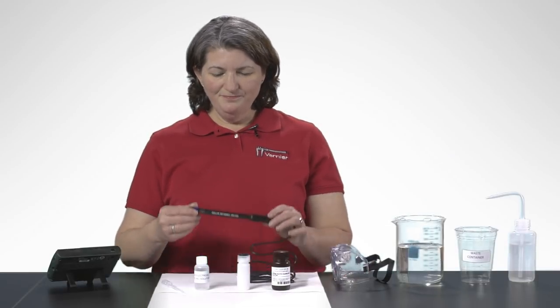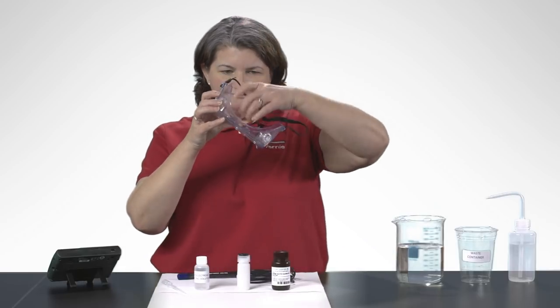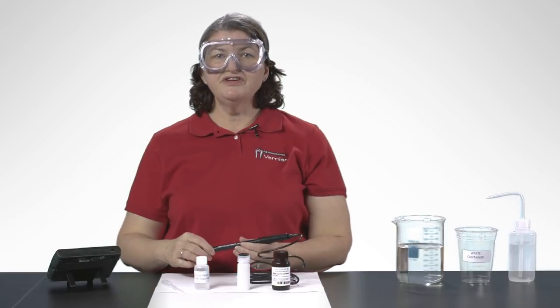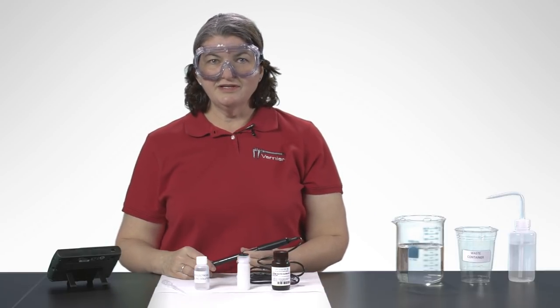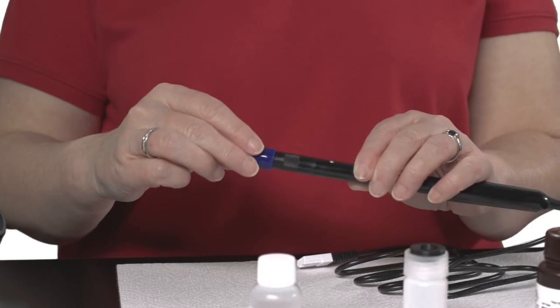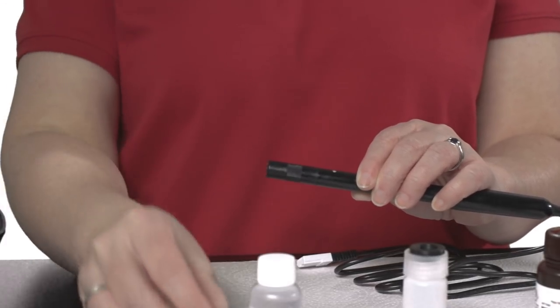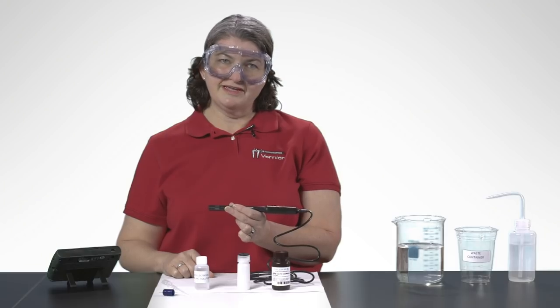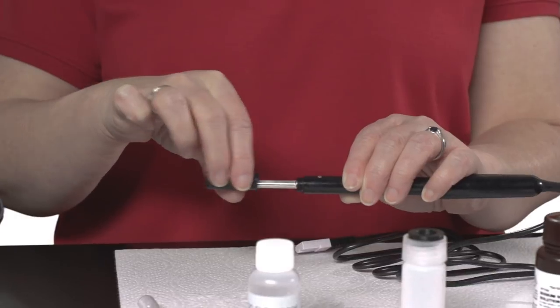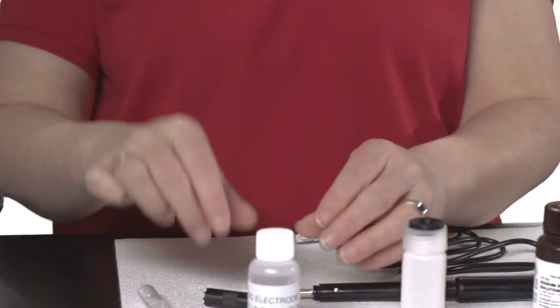So here's the probe, and I'm going to start with putting my goggles on. First thing you need to do is add the DIO electrode filling solution. So I'll take off my blue cap here, which you want to take off but save for when you store it later. It's a protective cap. And then at the end is a cap that unscrews, and that's where we're going to put our DIO filling solution.